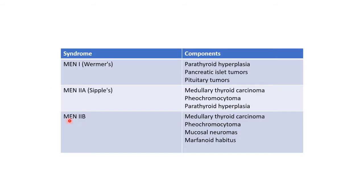Now let us see about the various MEN syndromes. MEN1 syndrome is also known as Wermer's syndrome. The components are parathyroid hyperplasia, pancreatic islet tumors, and pituitary tumors. MEN2a syndrome is also known as Sipple syndrome, and the various components are medullary thyroid carcinoma, pheochromocytoma, and parathyroid hyperplasia.